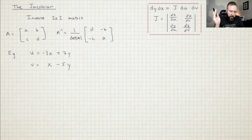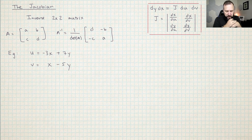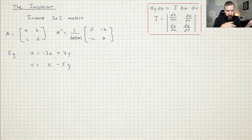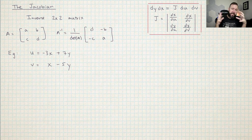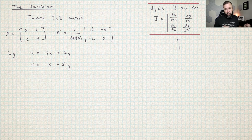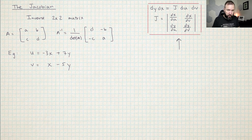If you make a substitution in multiple integrals, that's going to transform the space and that's going to change the area or the volume of the object. So if you want to know what the answer in the original space was, you're going to have to scale your answer by some amount. We call it the Jacobian — it's the amount that you have to rescale the area by if you make a substitution.